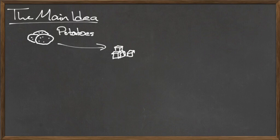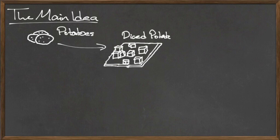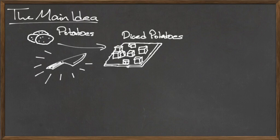First, we need to dice the potatoes. We can think of this process as a function, with the input being a plain potato, the output being a diced potato, and the rule or function applied is that of dicing with a knife.